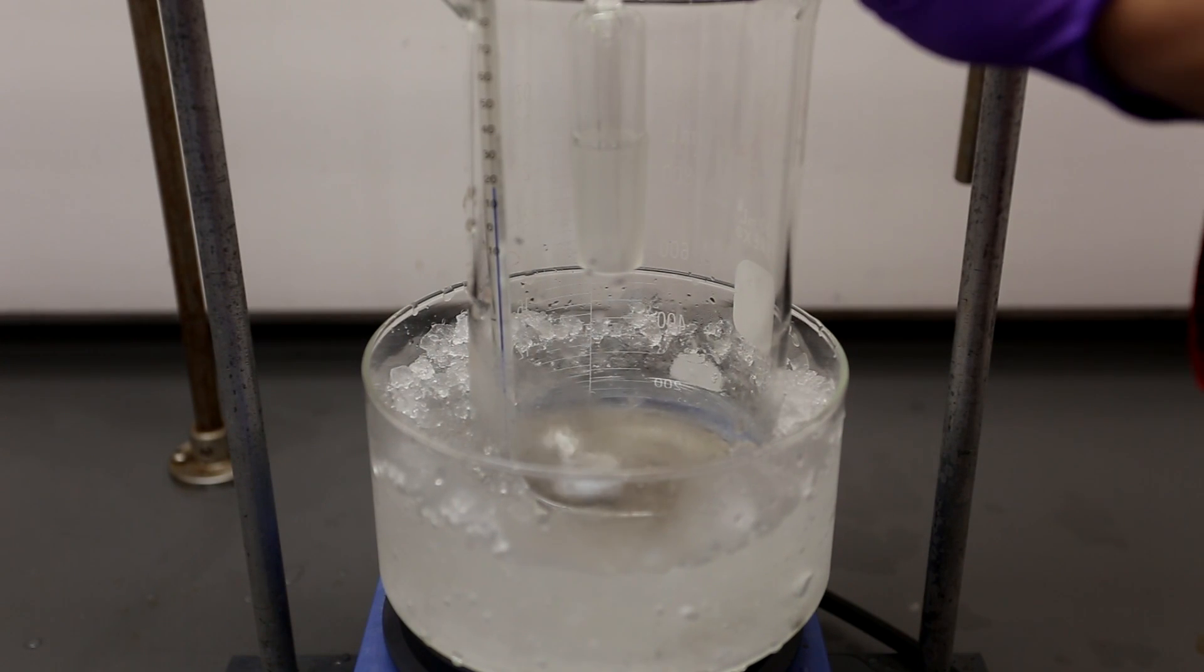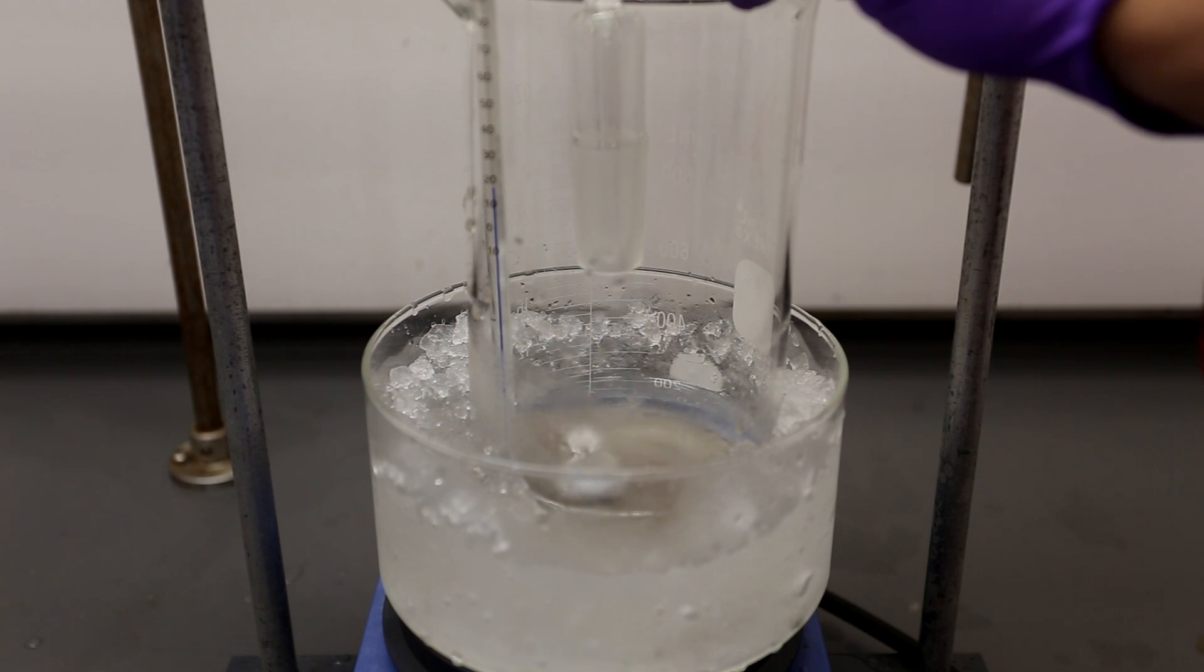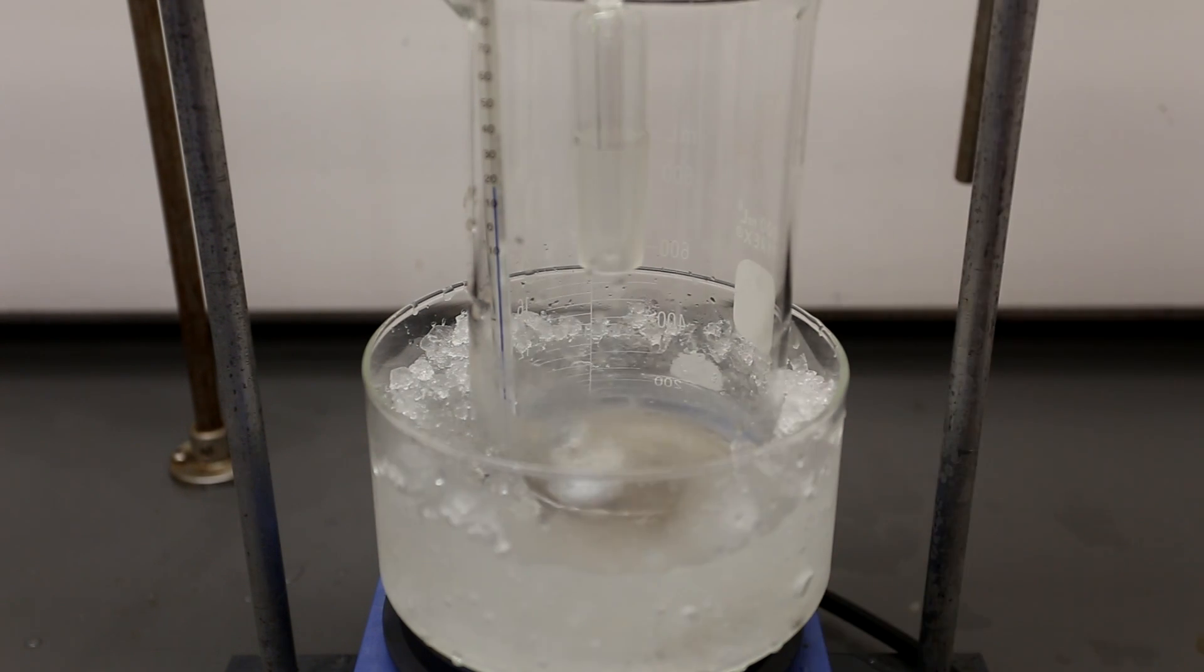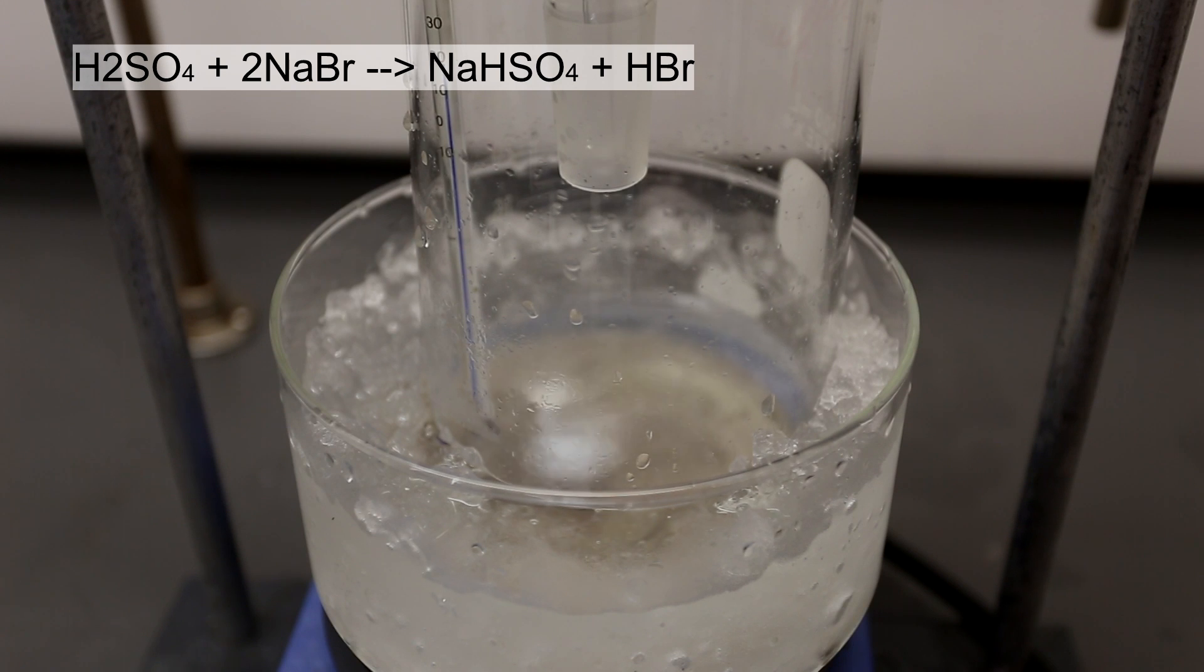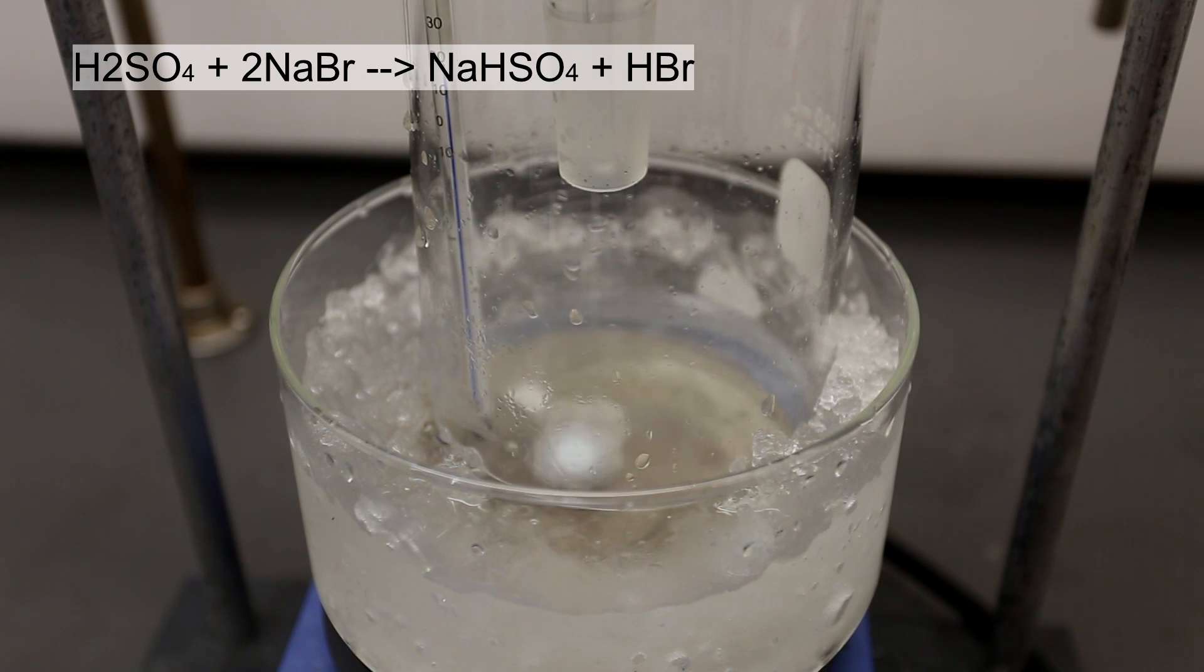Next, the sulfuric acid was slowly dripped into the solution and it's extremely important to keep the temperature of the solution below about 70 degrees Celsius. If the temperature rises above 70 degrees Celsius, we risk degrading the hydrobromic acid into elemental bromine. The reaction between the sodium bromide and the sulfuric acid is shown above. The sulfuric acid reacts with the sodium bromide to form sodium bisulfate as well as hydrobromic acid.